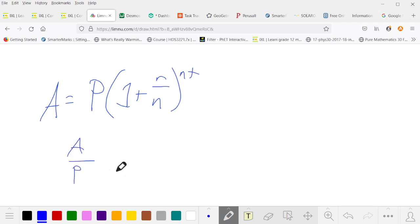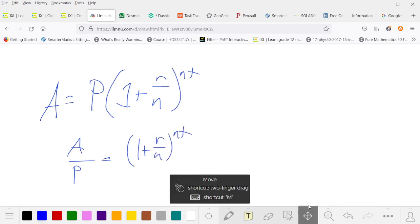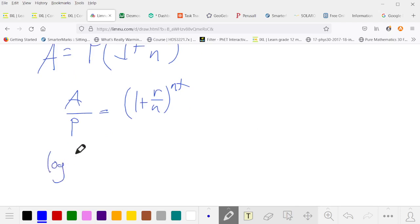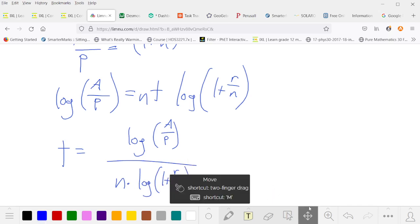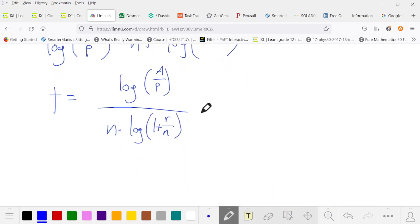So again, we have our amount as principal times 1 plus r over n to the nt. So we'll divide both sides by the principal. And now to find time on its own, we could take the log of both sides. And if we use the common log with that base 10, or we might as well because we don't have any clean logs inside these. So the total amount of time is the log of the amount over principal divided by n times the log of 1 plus r over n. Again, the advantage to doing all the algebra without numbers is that now we can substitute into this every time.